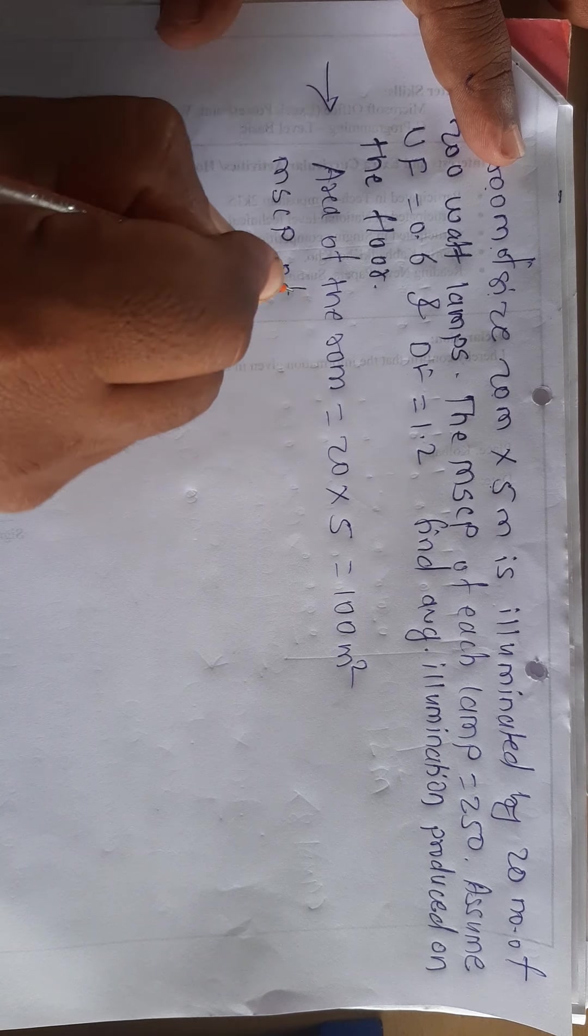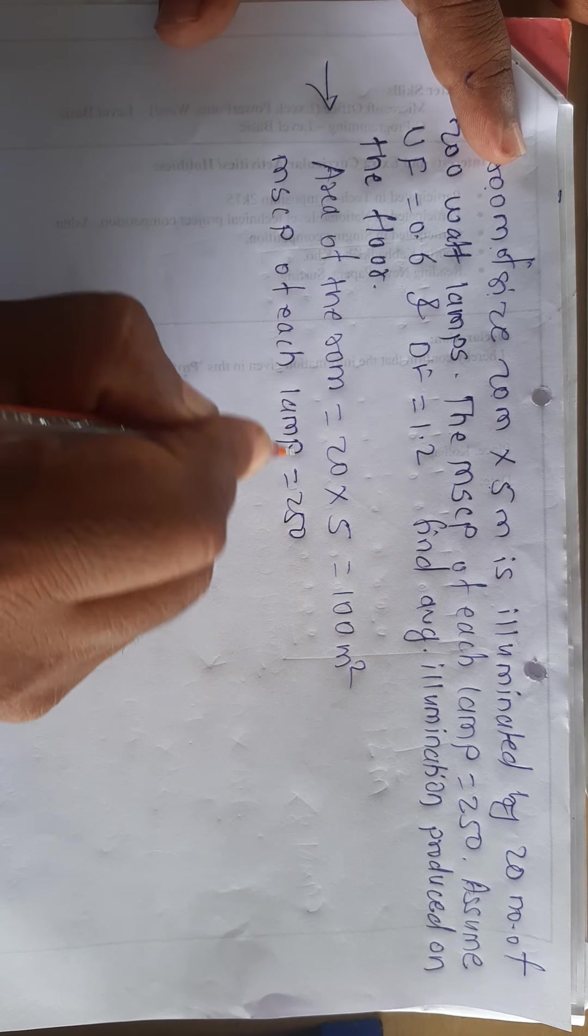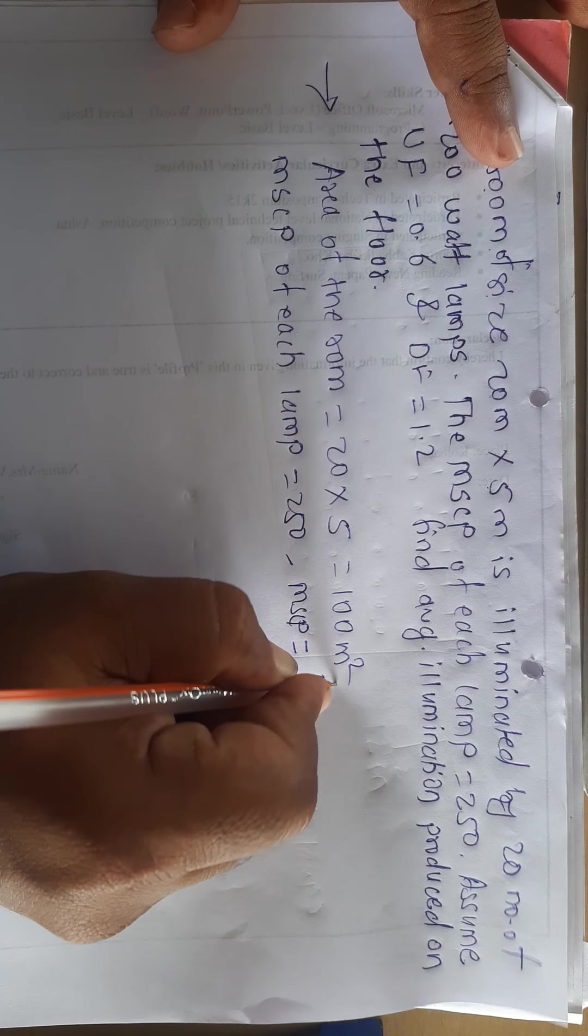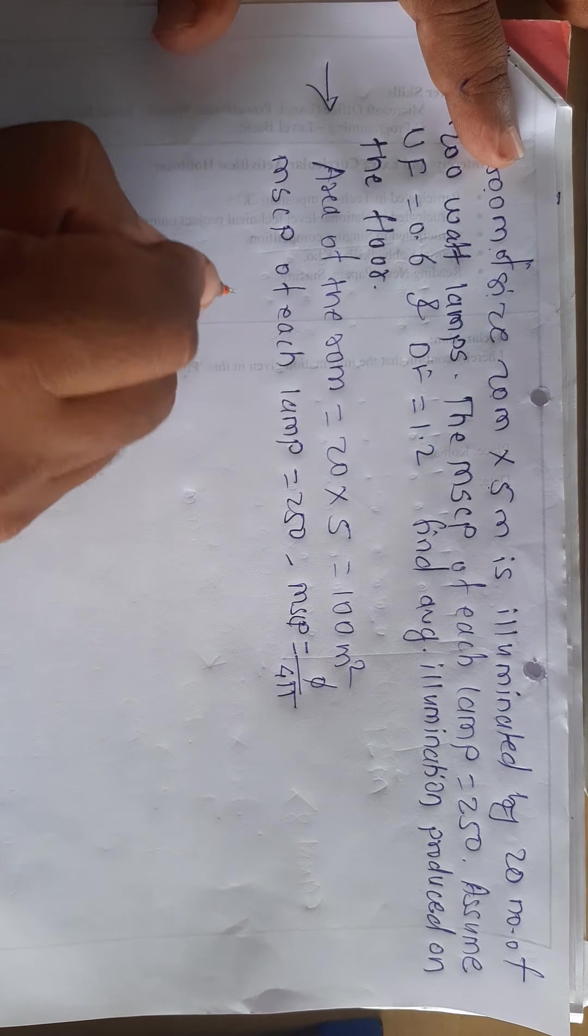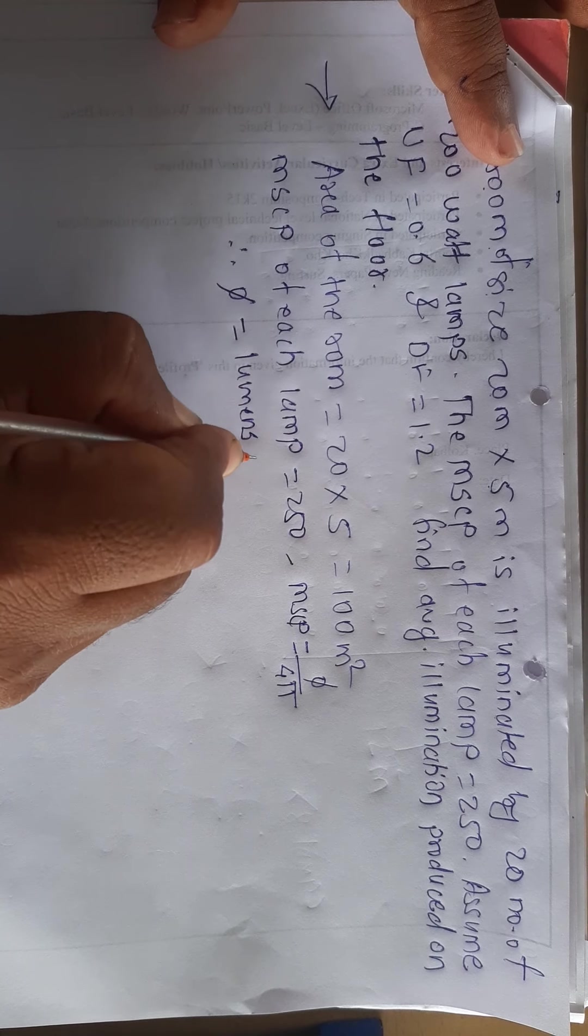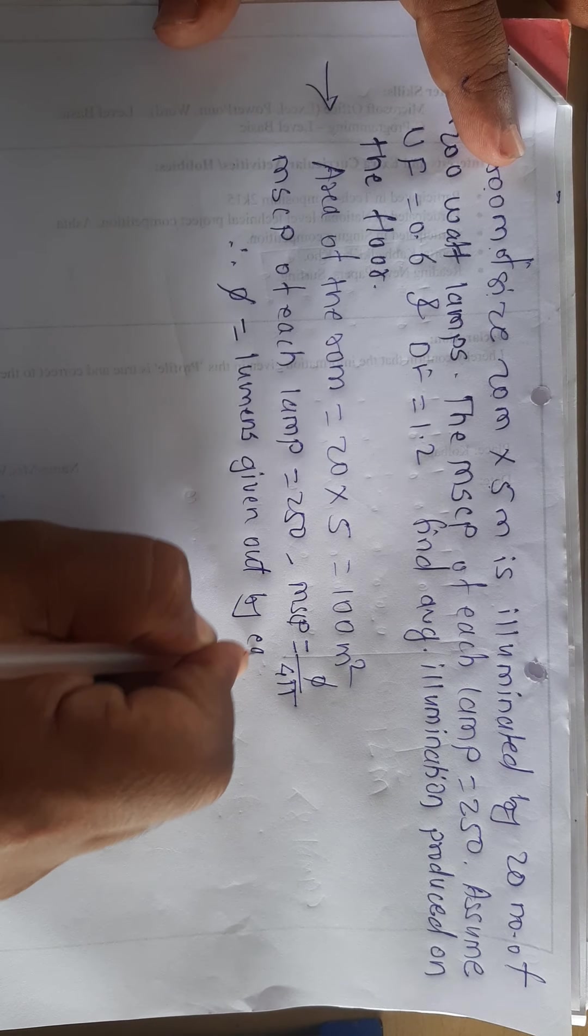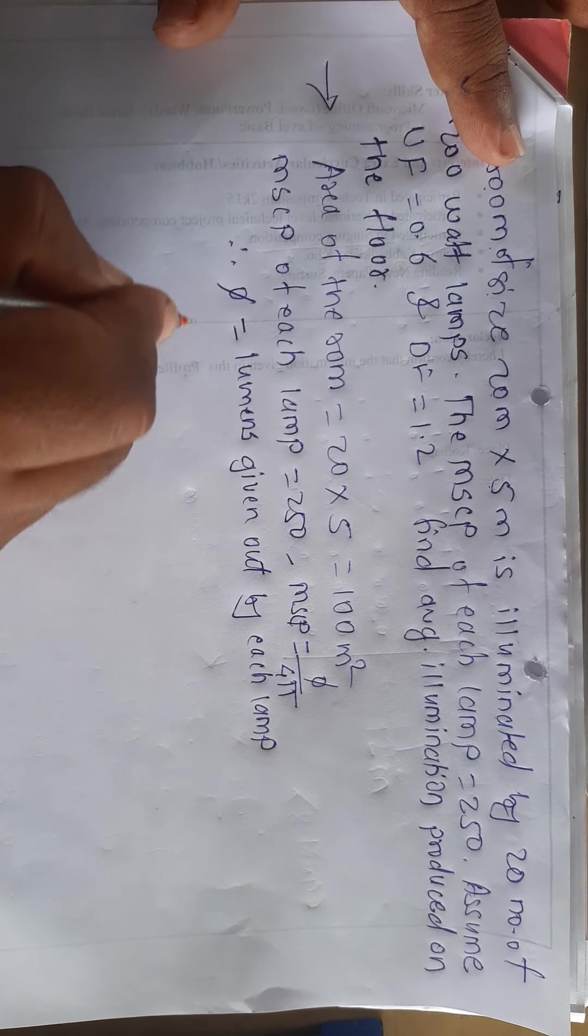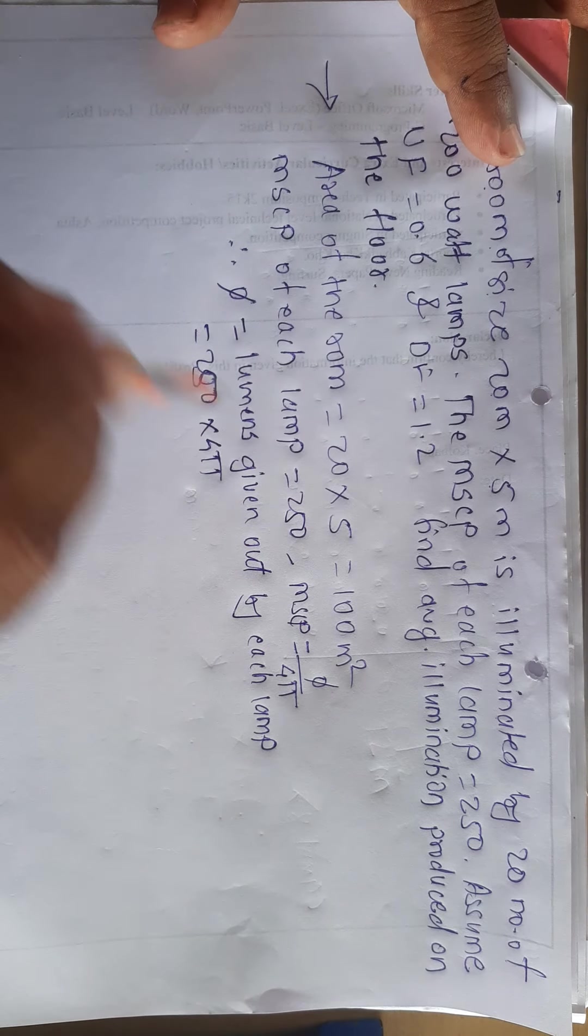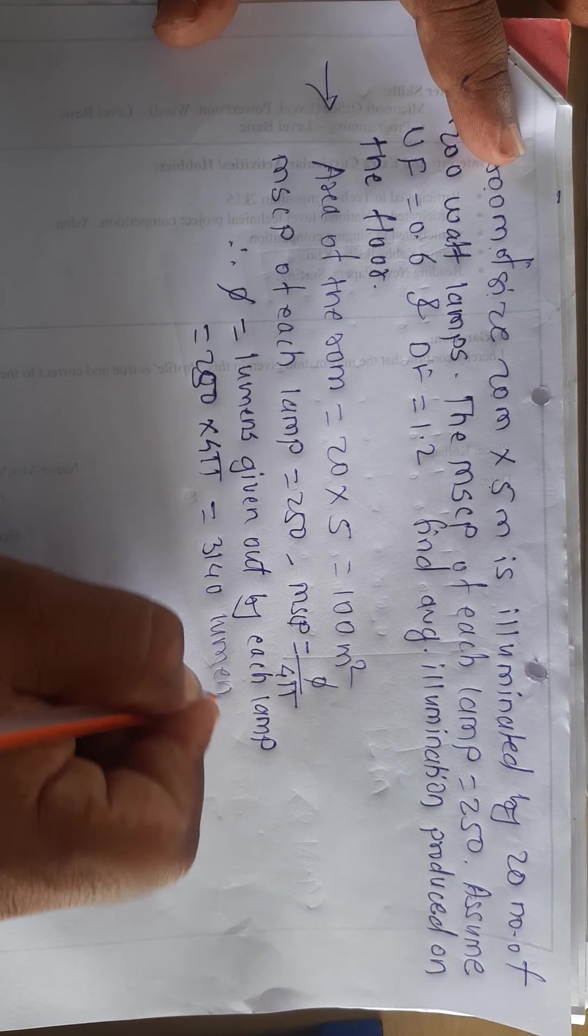MSCP of each lamp is 250. MSCP is equal to Φ divided by 4π. Let us now apply the Φ calculation. Φ is the lumens given out by each lamp: 250 into 4π which is 3140 lumens.